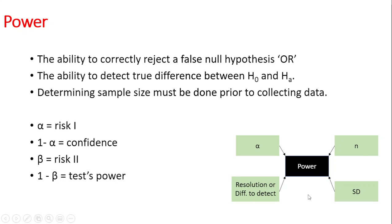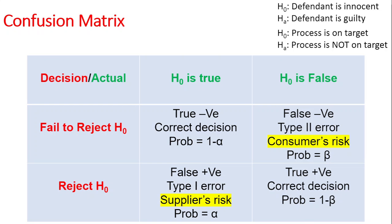These are the four things that must be considered when doing hypothesis testing in order to think about power. Another thing to keep in mind is the confusion matrix, which is how you understand what power is.